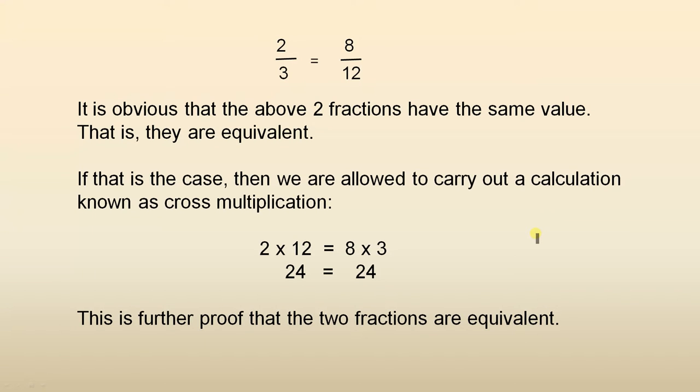2 over 3 equals 8 over 12. It is obvious that the above two fractions have the same value. That is, they are equivalent. If that is the case, then we are allowed to carry out a calculation known as cross multiplication.